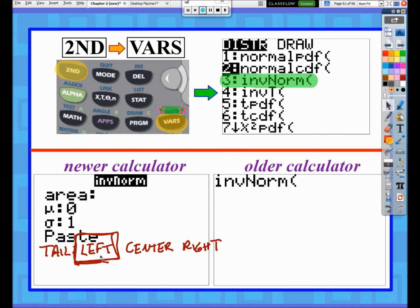If you have one of those newer calculators that has a left, center, right tail option, we're always going to do left tail, unless you know how to figure out what that really means by left, center, and right, then you can figure that out on your own.